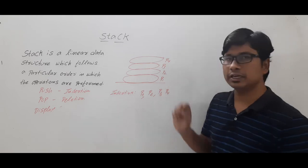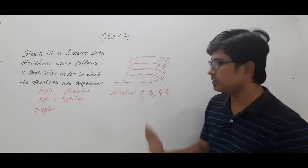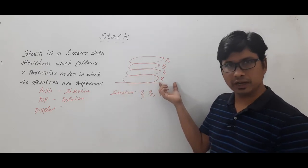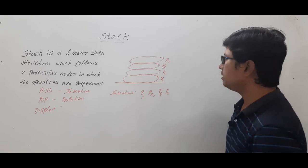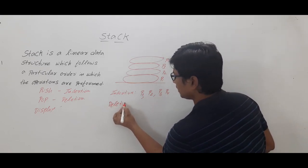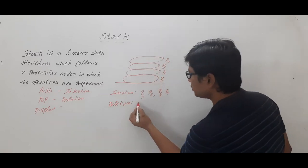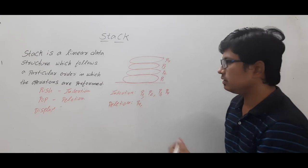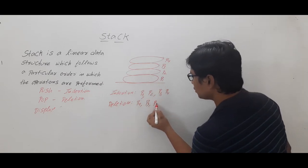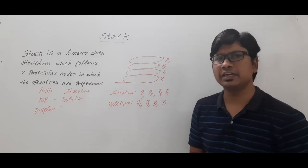Now if I want to remove plate number one, I first need to remove plate number four, then plate number three, then plate number two, and only then can I remove plate number one. So the deletion happens in reverse order: plate four first, then three, then two, then one.